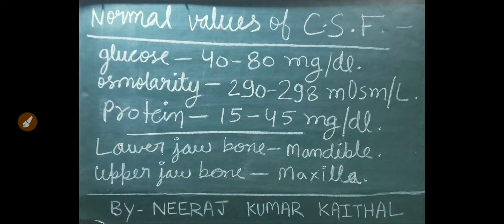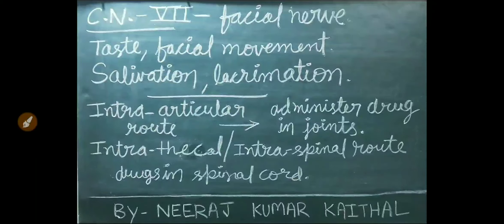Lower jawbone is the mandible. Upper jawbone is the maxilla. Cranial nerve number 7 is the facial nerve. Functions of facial nerve are taste, facial movement, salivation, and lacrimation.